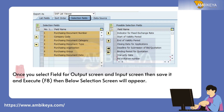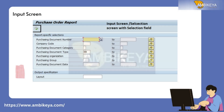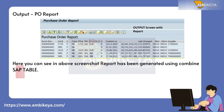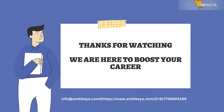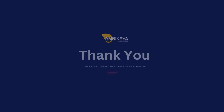Once you select the fields for the output screen and input screen, save it and execute with F8. The selection screen will appear as an input screen. The PO report is generated here. As you can see in the above screenshot, the report has been generated using combined SAP tables. Thanks for watching — we are here to boost your career.